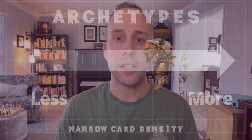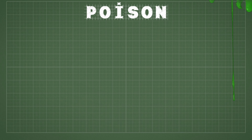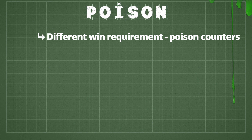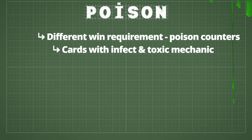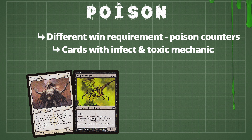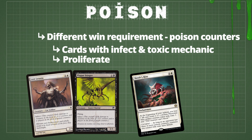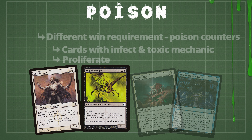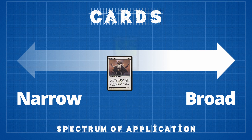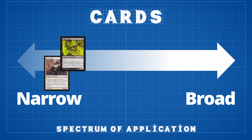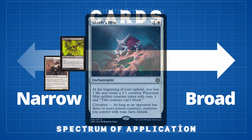Let's look at another example: poison is an archetype looking to defeat the opposing player through poison counters rather than through damage — if a player accrues 10 poison counters, they lose the game. Players drafting this archetype will be looking for ways to give their opponent poison counters. Some examples include infect creatures like Lost Leonin and Plague Stinger, cards with the toxic mechanic like Skrelv's Hive, and cards with the proliferate mechanic like Experimental Augury. Lost Leonin and Plague Stinger are below-rate creatures for their mana value and stats, but they have the infect mechanic, so likely only players drafting a poison-style deck are going to be interested in them.